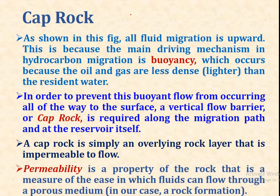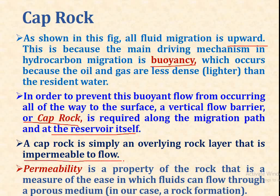The third requirement is the cap rock. As shown in the figure, all fluid migration is upward. This is because the main driving mechanism in hydrocarbon migration is buoyancy, which occurs because oil and gas are less dense — lighter — than the resident water. In order to prevent this buoyancy-driven flow from reaching the surface, a vertical flow barrier, a cap rock, is required along the migration path and at the reservoir itself. A cap rock is an overlying rock layer that is impermeable to fluid flow. Permeability is a property of rock that measures the ease with which fluid can flow through a porous medium — in our case, a rock formation.